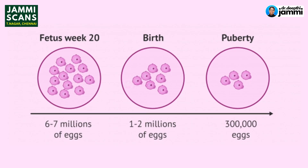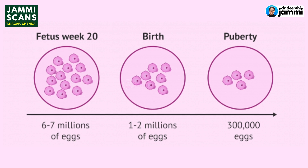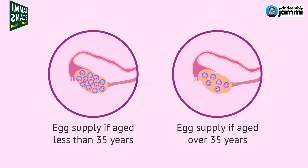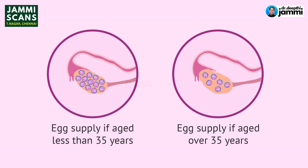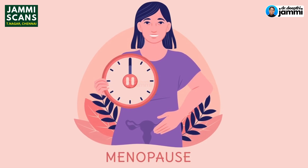If the AMH is less than 1.5, we already consider that a low value. As age increases — around 37 to 38 — AMH levels start to decline. As you approach the age of menopause, AMH becomes very low.